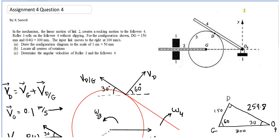So if I draw a line perpendicular to VG and another line perpendicular to VD, at this point the intersection is P13. It's the instantaneous center of the disc.